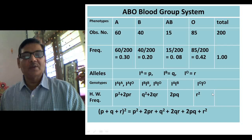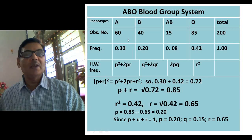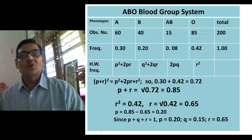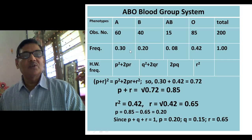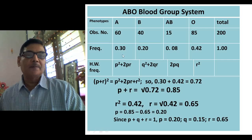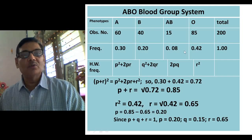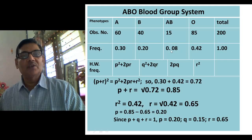Now we proceed to the next step. The frequency row shows the number of individuals of each blood group. Their frequencies are: P² + 2PR = 0.30 for blood group A, Q² + 2QR = 0.20 for blood group B, 2PQ = 0.08 for blood group AB, and R² = 0.42 for blood group O.